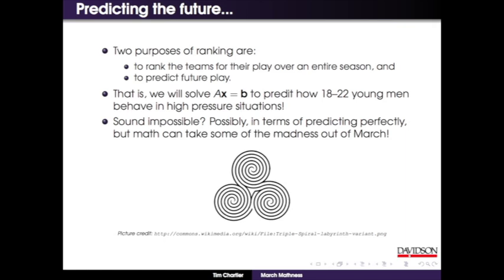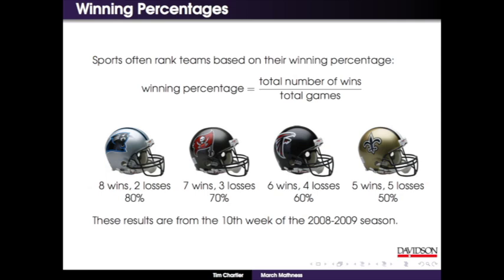Let's see where this method comes from. There's one part of the derivation that you need to remember, because if you don't, you can actually come up with a way to create a bracket where losing helps you go up in ranking. A lot of times we use winning percentage - how many total games you win doesn't matter who you beat. It's just your total wins over total games. Here I have the 2008-2009 season in the tenth week.